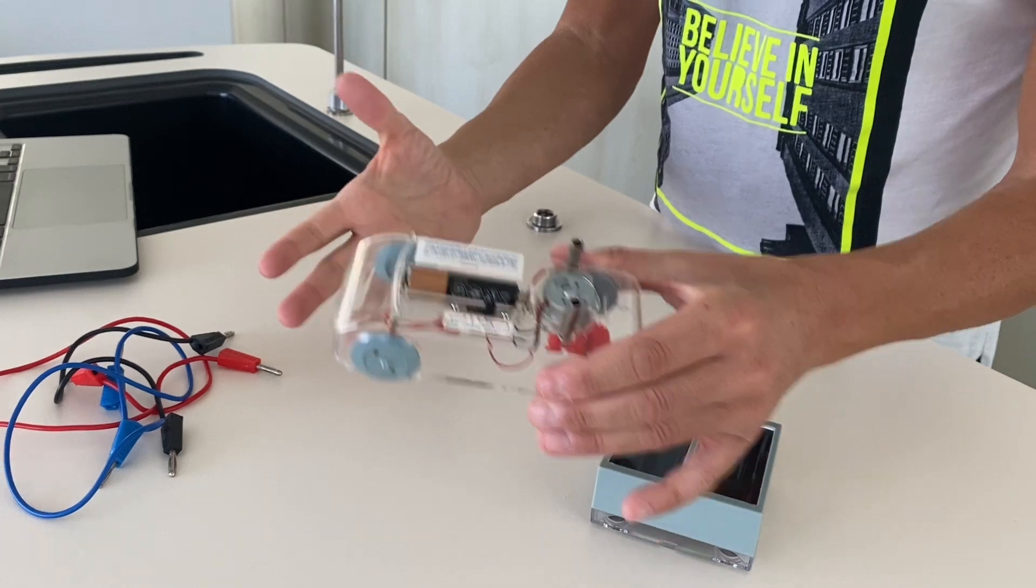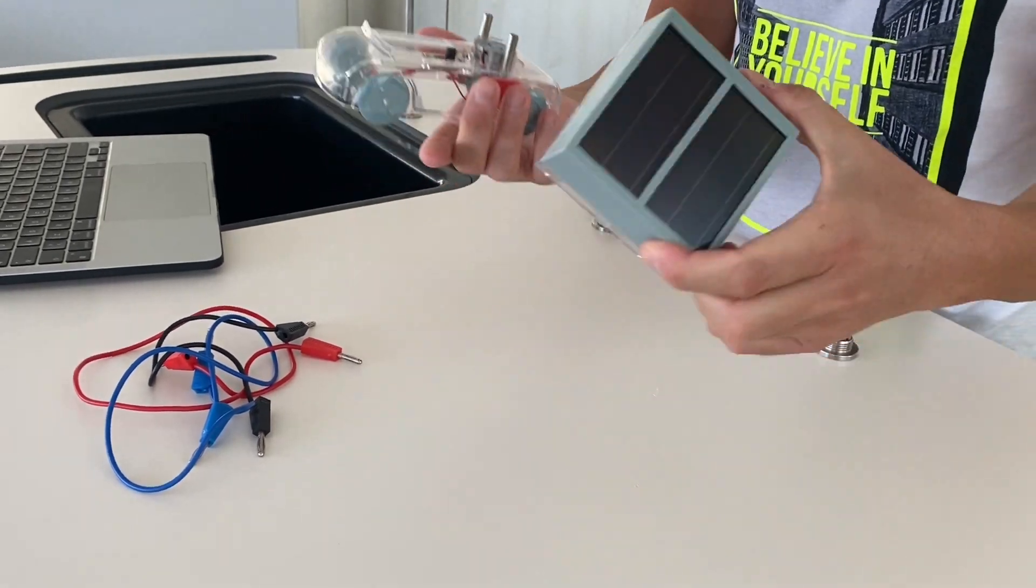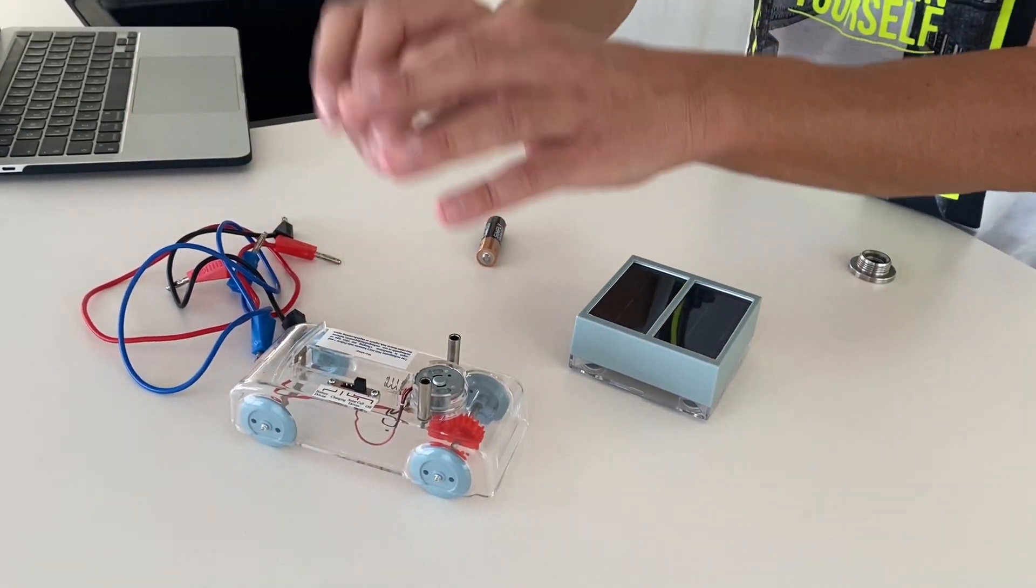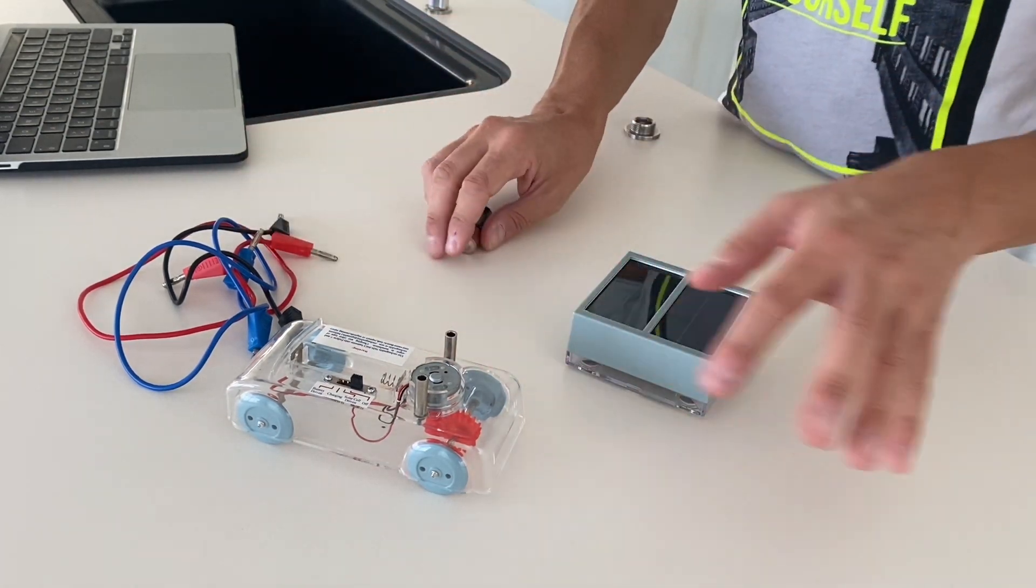But what about powering the car by using photovoltaic panels? All we have to do is connect the cables to the car and then to the panel to create a closed circuit.